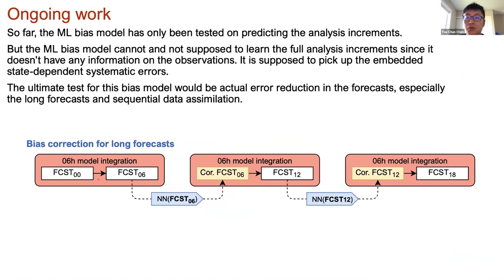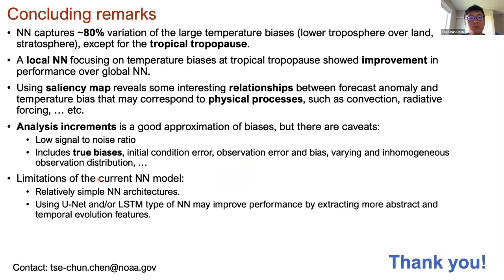The ultimate goal is to apply online bias correction to each six-hour forecast segment. This is the crucial real test because the analysis increment is not really the truth — we're using the neural network to distill useful bias information out of it. The take-home message is that the neural network can extract useful information from analysis increments and reveal interesting relations between forecast and bias. We're looking to improve the neural network architecture to extract more information. Thank you.